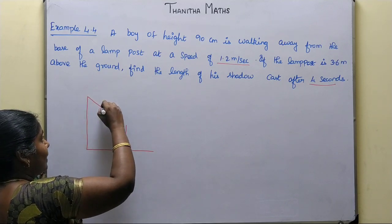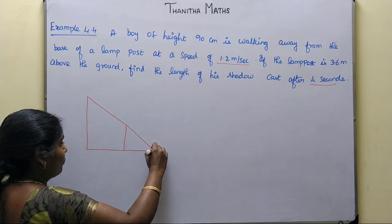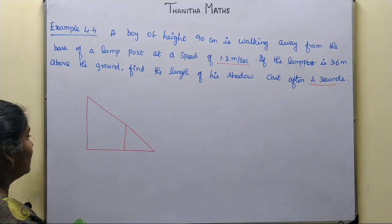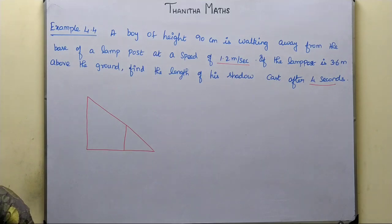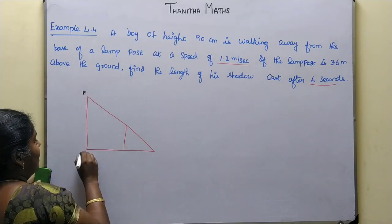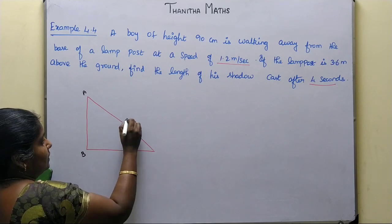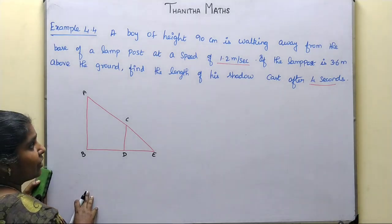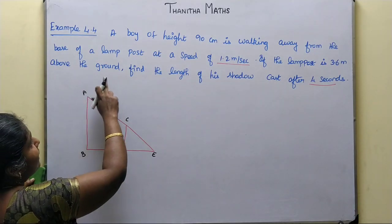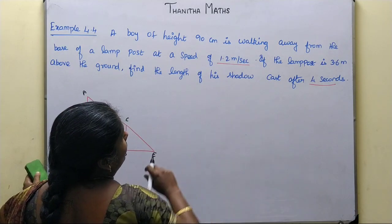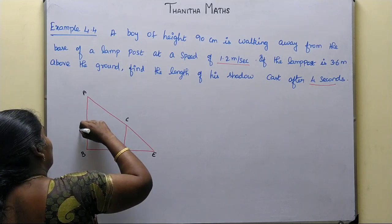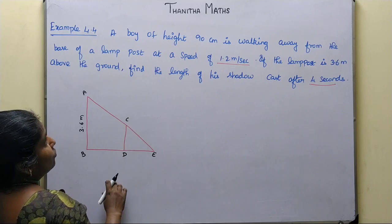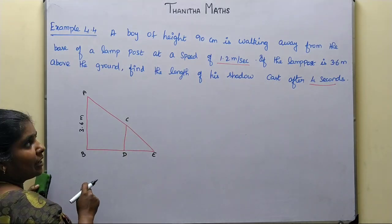We have to find the length of his shadow. Now, labeling the diagram: this is A, B, C, D, E. A and B is the height of the lamp post. The lamp post AB is 3.6 meters. The boy CD has a height of 90 cm.